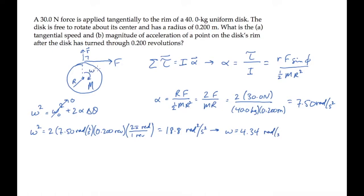Now we can find V sub T, the tangential speed. That's what we're asked for in part A. That just equals R times omega. Substitute the known values, and calculate to see that it equals 0.868 meters per second.